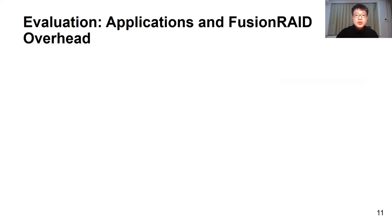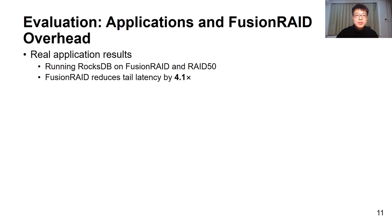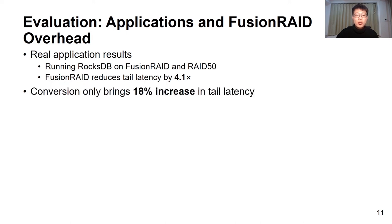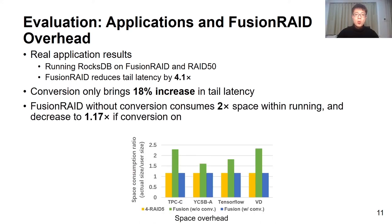We also tested with real applications. When running RocksDB with two YCSB workloads with significant write ratios, Fusion Read reduces tail latency by over 4 times compared to RAID-5.0. This result is obtained with Fusion Read's auto-conversion from replicated to RAID storage, which itself brings a slight increase of 18% in tail latency. With such conversion, Fusion Read's extra space consumption from replicated writes largely becomes temporary, returning its space consumption factor to 1.17 — the same level as RAID-5.0.